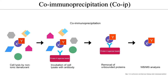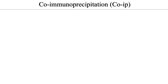Second, co-IP can be used as a way to find the target protein. In fact, in the yeast two-hybrid experiment that I mentioned previously, the experiment is conducted in vitro. In order to determine whether the binding is more accurate, an experiment must be performed in vivo. The experiment method is as follows.